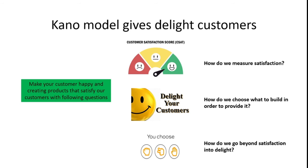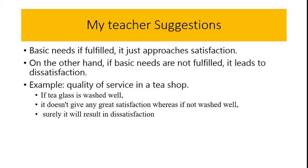The Kano model makes your customers happy and creates products that satisfy customers by addressing three key questions: how do we measure satisfaction, how do we choose what to build in order to provide it, and how do we go beyond satisfaction into delight. These three questions are important with the Kano model for converting satisfied customers into delighted ones.